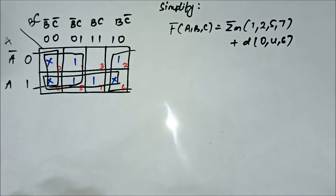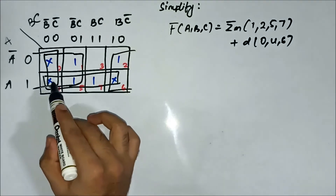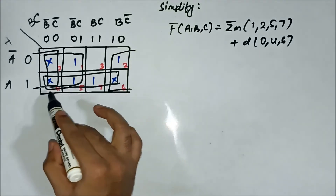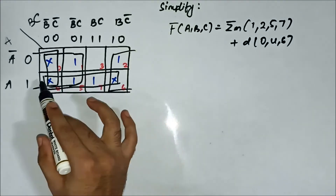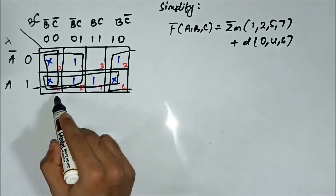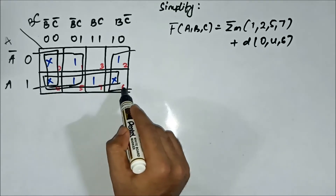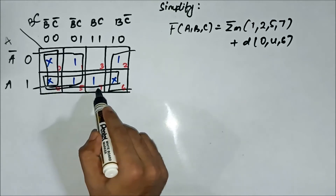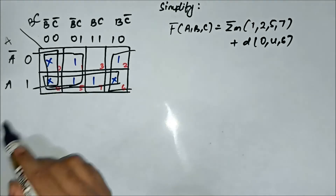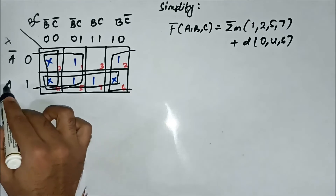We have formed the groups. Now we have to identify the common variables. Please pay attention — for this quad involving cells 4, 5, 7, and 6, the common variable is A.